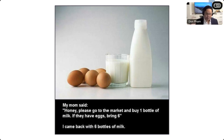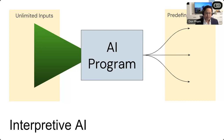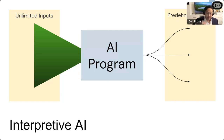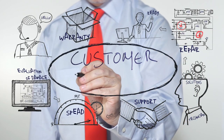The next iteration is what I call interpretive AI, where you have unlimited inputs but there are still predefined responses. Today, if you call certain companies for customer service, they'll say something like, 'In your own words, please tell me a little bit about what your issue is.' The idea is to take undetermined inputs, try to interpret what is being said in plain English, but on the back end, once it's interpreted, it still routes to predefined responses.